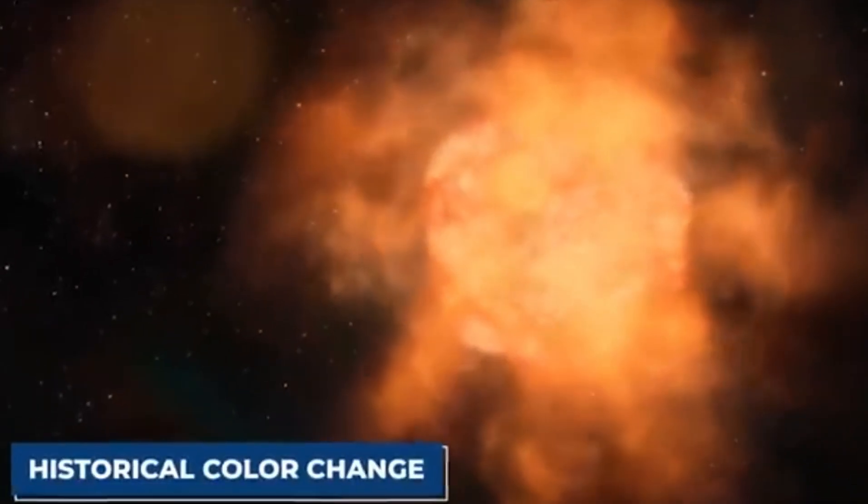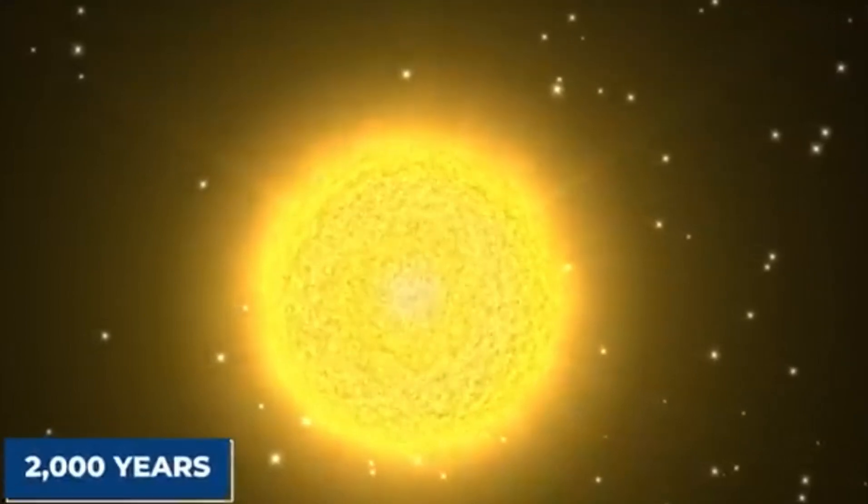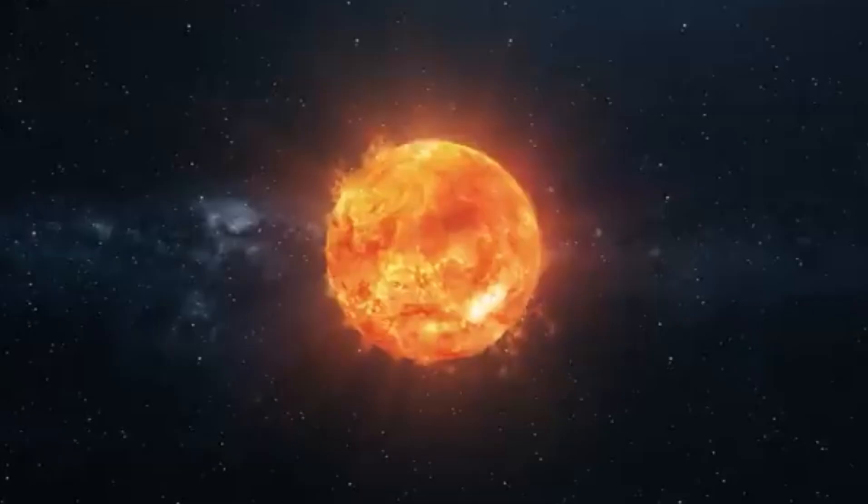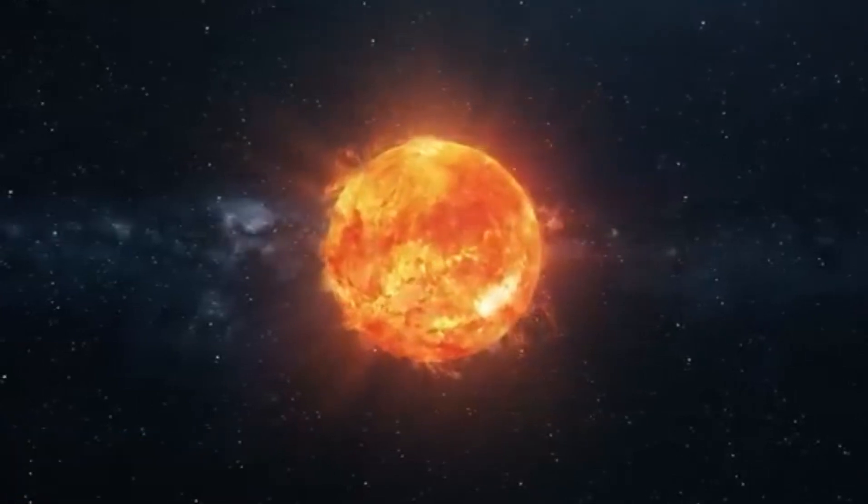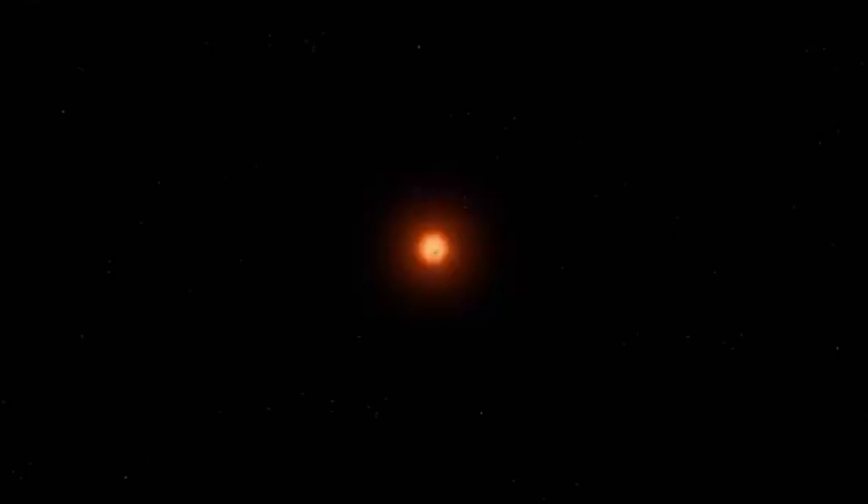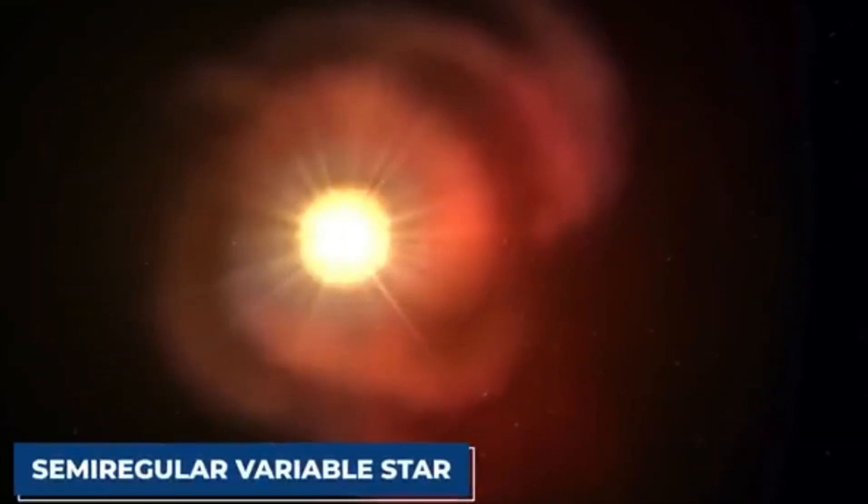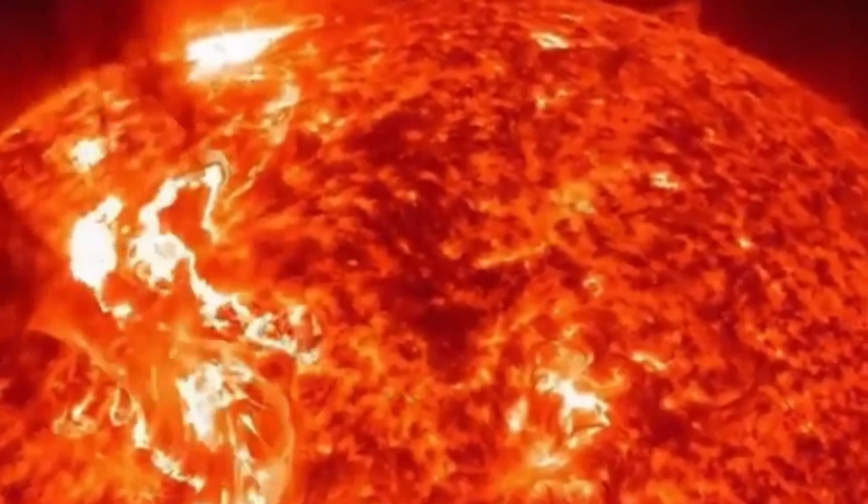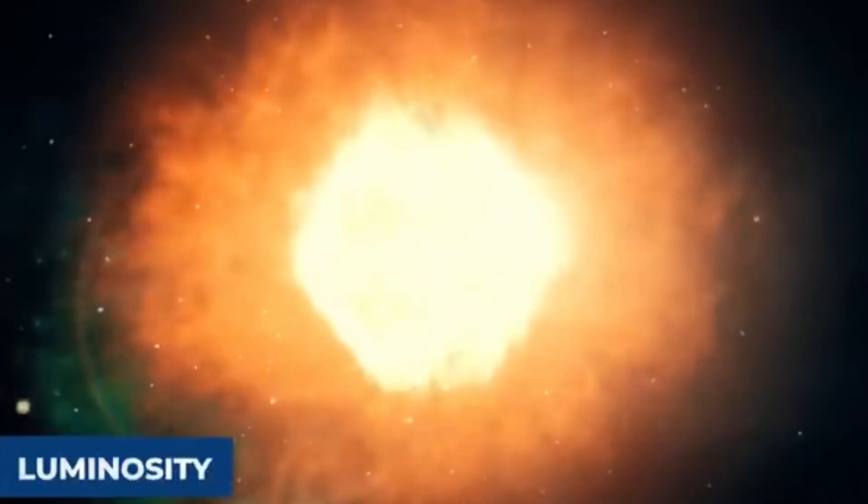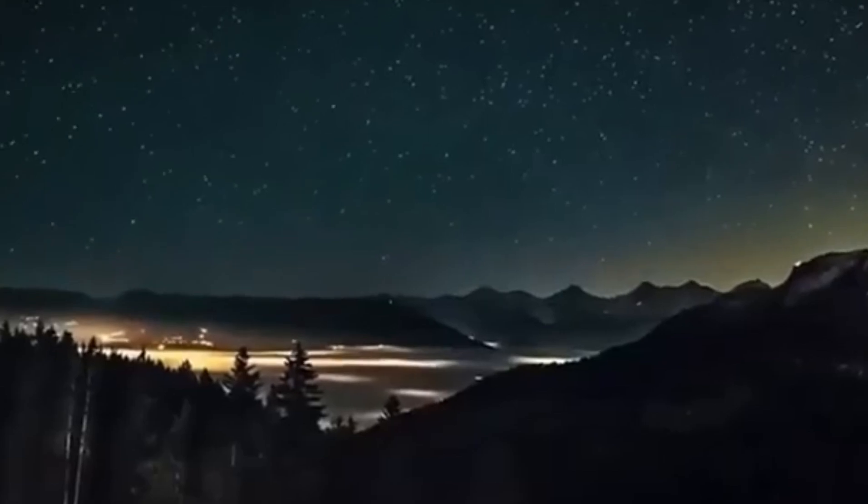Betelgeuse's distinctive reddish hue is another hallmark of its current stage. The red color is a result of its relatively cooler surface temperature compared to other stars like our Sun. While the Sun's surface temperature is about 5,500 Kelvin, Betelgeuse's cooler surface registers temperatures around 3,500 Kelvin. This cooler temperature allows Betelgeuse to emit light at wavelengths that give it a red appearance. But this color is not just a visual trait. It provides clues about the star's physical condition and the processes occurring within its vast gaseous expanse.